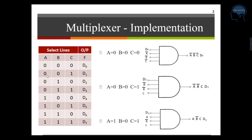The next condition is 0, 0, 1. At that time D1 is the data line selected and transferred to the output. So 0, 0, 1 means A-bar, B-bar, C. Then next is 0, 1, 0, which is A-bar, B, C-bar. Then A, B-bar, C means 1, 0, 1 — that selects D5, which is transferred to the output. If you consider 0, 1, 1 — which is A-bar, B, C — at that time D3 is the data line selected and transferred to the output.